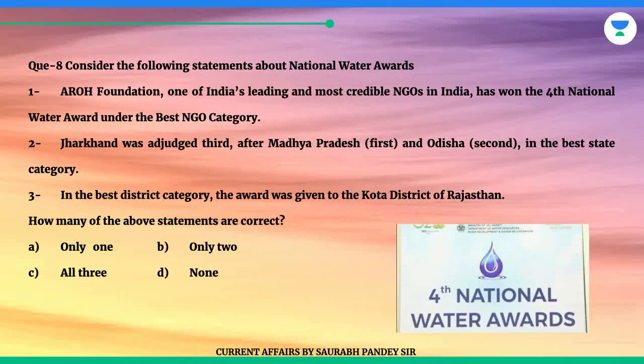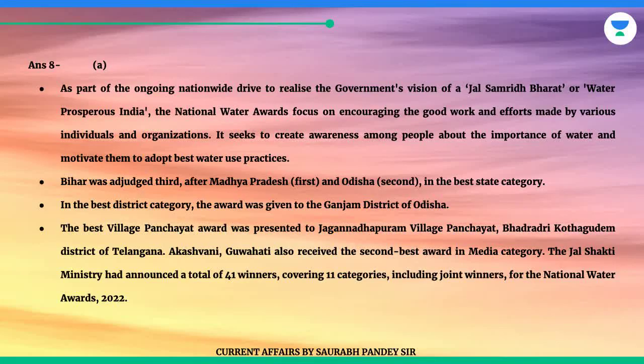How many of the above statements are correct? A: Only one. B: Only two. C: All three. D: None. The answer is A. As part of the ongoing nationwide drive to realize the government's vision of 'Jal Samridh Bharat' or Water Prosperous India, the National Water Awards focus on encouraging good work and efforts made by various individuals and organizations. It seeks to create awareness about the importance of water and motivate people to adopt best water use practices. Bihar was adjudged 3rd after Madhya Pradesh (1st) and Odisha (2nd) in the Best State category.